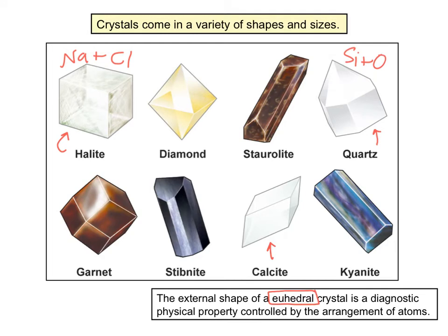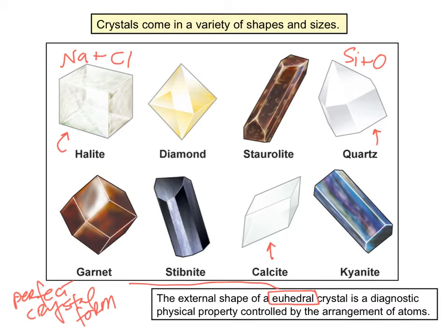Euhedral is a term that means a mineral that has developed its perfect crystal form. Not all minerals get to develop into euhedral crystals — some run out of space or run out of the elements they need to keep developing, and so they might not develop these really characteristic shapes.